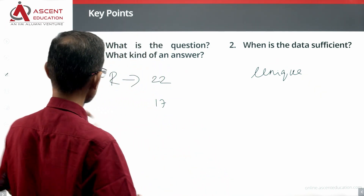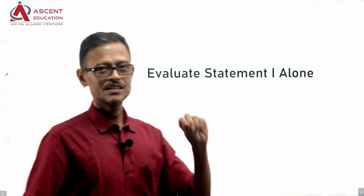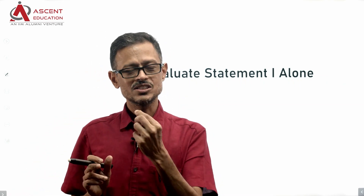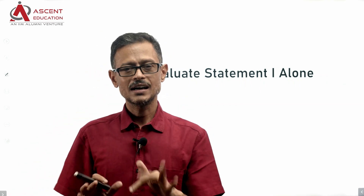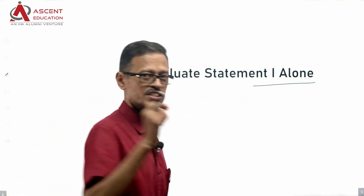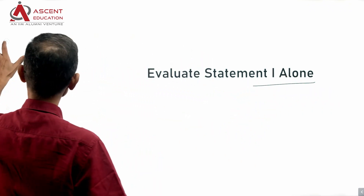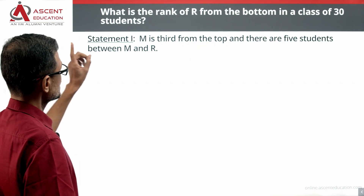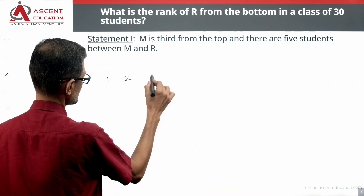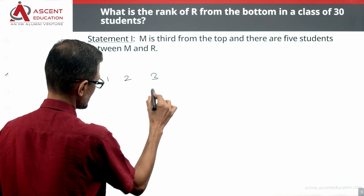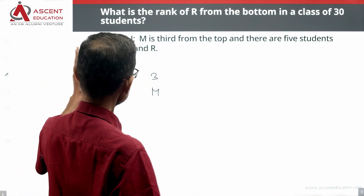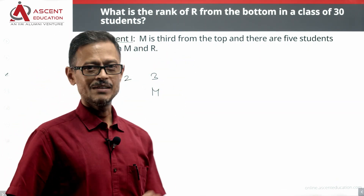Let's evaluate statement one alone. Statement one tells us M is third from the top, and there are five students between M and R. So: rank 1, rank 2, rank 3 — M is at rank 3. Then five students follow between M and R.